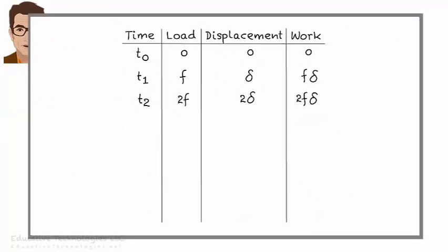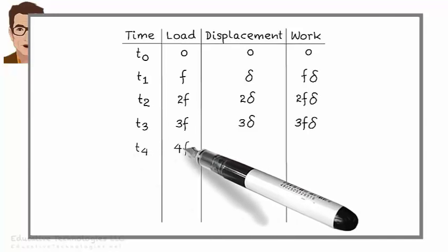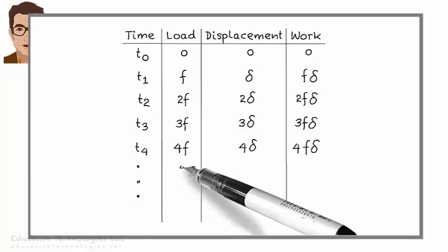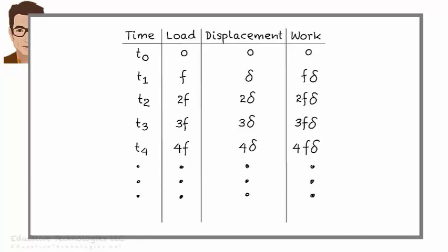Here's the data in tabular form. Hopefully you can see the emerging pattern. At time t4, total load on the beam is 4F, total displacement is 4 delta, and the incremental work done is 4F delta. We continue incrementing the load until the entire intended load is applied at time step n. At tn, total load is nF, total displacement is n delta, and the work increment is nF delta.